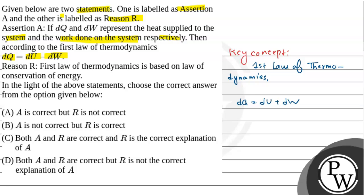Now, in the question we're given that dQ is the heat supplied and dW is the work done on the system.